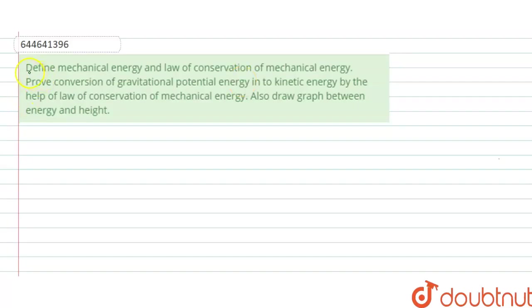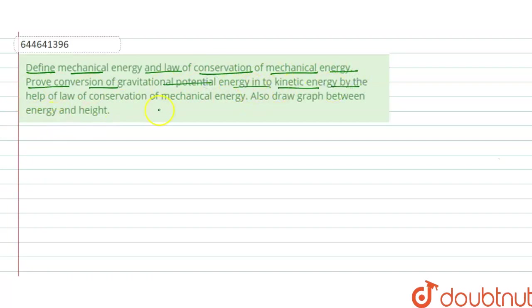The question is: define mechanical energy and the law of conservation of mechanical energy. Prove conservation of gravitational potential energy into kinetic energy using the law of conservation of mechanical energy. Also draw a graph between energy and height.